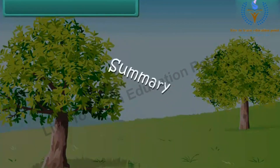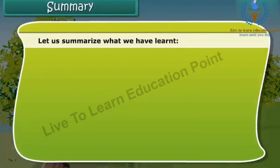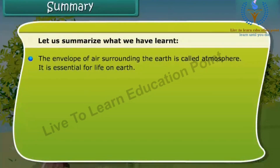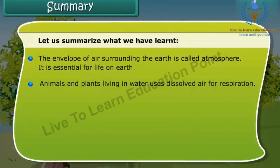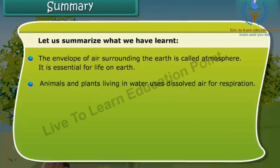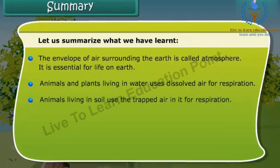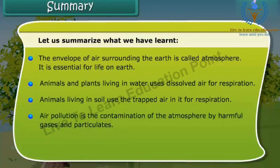Let us summarize what we have learned. The envelope of air surrounding the earth is called the atmosphere, and it is essential for life on earth. Animals and plants living in water use dissolved air for respiration. Animals living in soil use the trapped air in it for respiration. Air pollution is the contamination of the atmosphere by harmful gases and particulates.